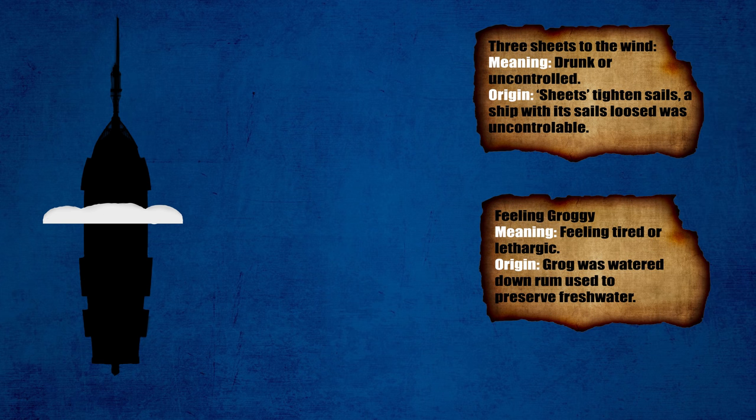It never ceases to surprise me just how many of our sayings are based on naval slang. A good example of this is Three Sheets to the Wind, used to describe someone really drunk or out of control. Well, where did this come from?